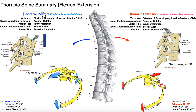Before we get into these particular movements, let's talk about a few things. Number one, the ribs articulate in two ways with the vertebra: costovertebral joints and costotransverse joints. But the joints that we're going to be worried about for the movement of the ribs are going to be the costotransverse joints.